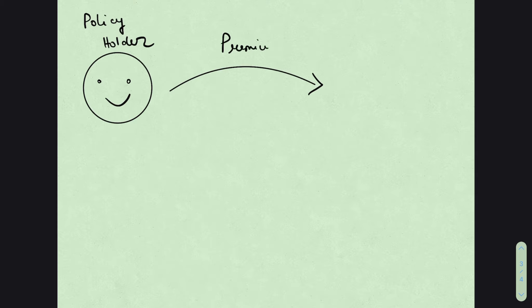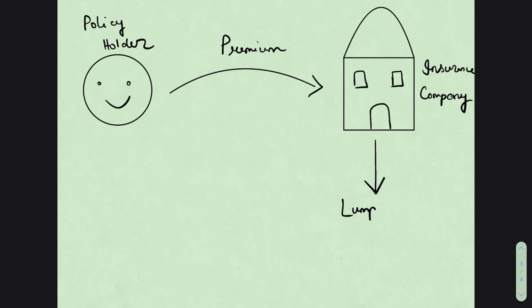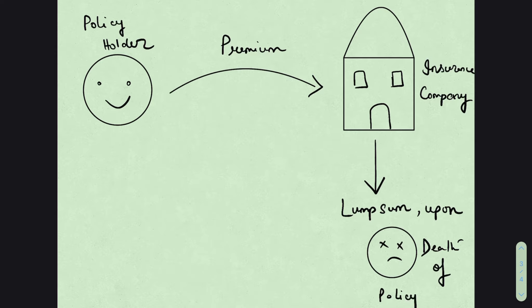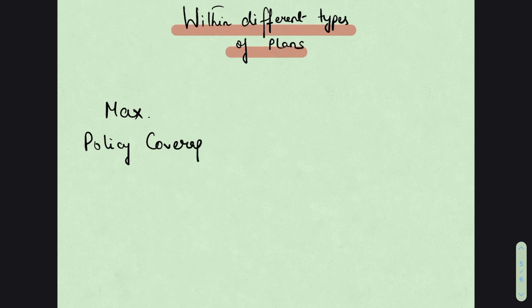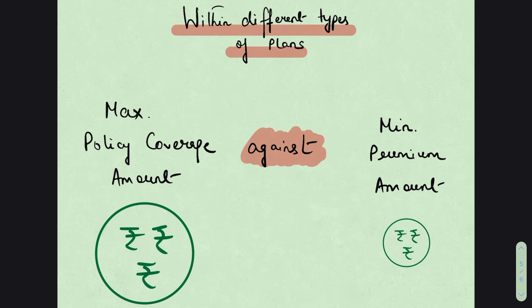Coming to the structure — what is the structure of a life insurance product? Against a fixed payment, also known as a premium, made at regular intervals to the life insurance company, it agrees to pay a lump sum amount upon the death of the policyholder. Your objective would be to get the maximum policy coverage amount against payment of the least amount of premiums.